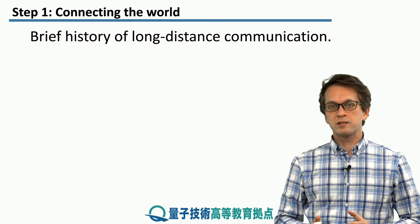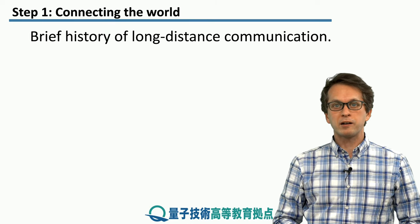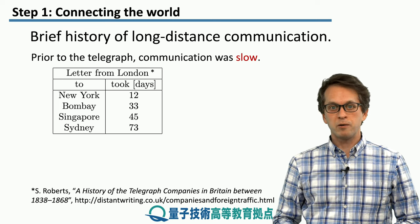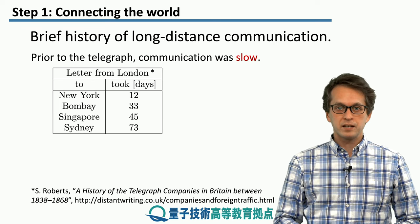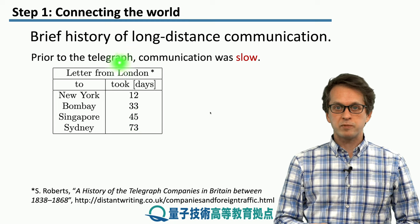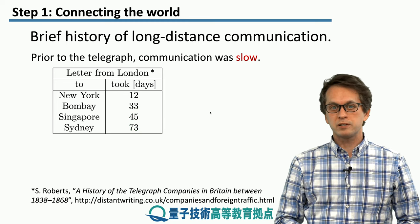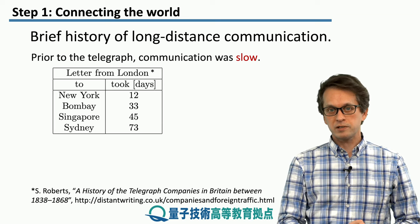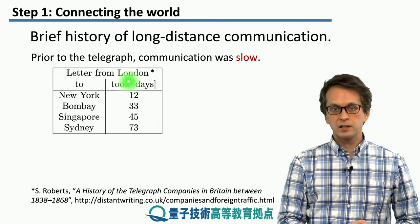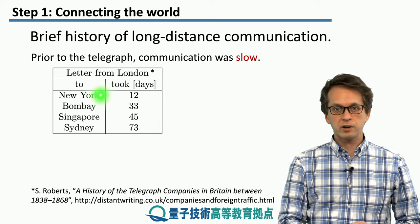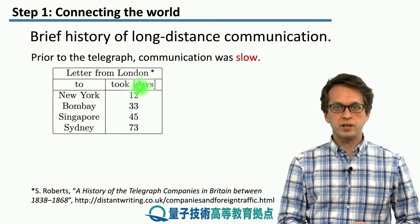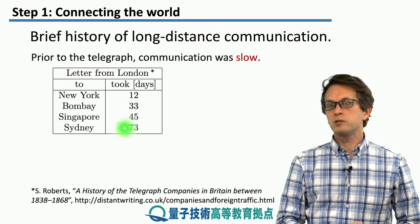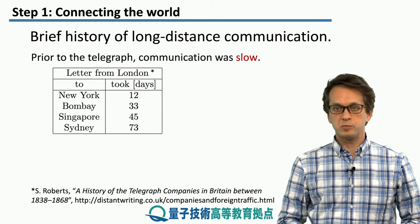Let's consider a little bit of historical background to long-distance communication and go to the year 1852. Just before the widespread use of the telegraph, communication was extremely slow. To give you some idea how slow it was, if you wanted to send a letter from London to New York, it took around 12 days to arrive. If you wanted to send it to Sydney, you had to wait 73 days for the letter to be delivered.